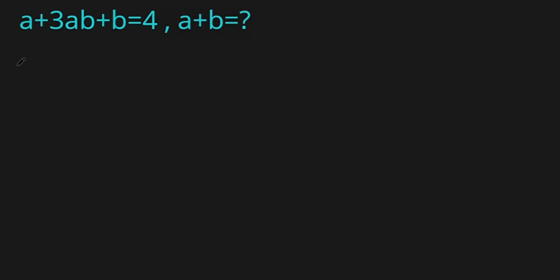Hello everyone, welcome to the video. Let's solve this equation for integers: a + 3ab + b = 4, and let's find a + b. We'll take out 3a from the first two terms, leaving a bracket with 1/3 + b, plus b equals 4.